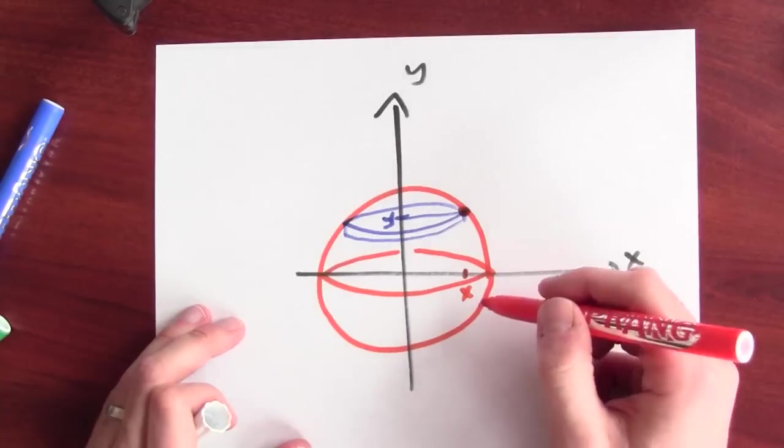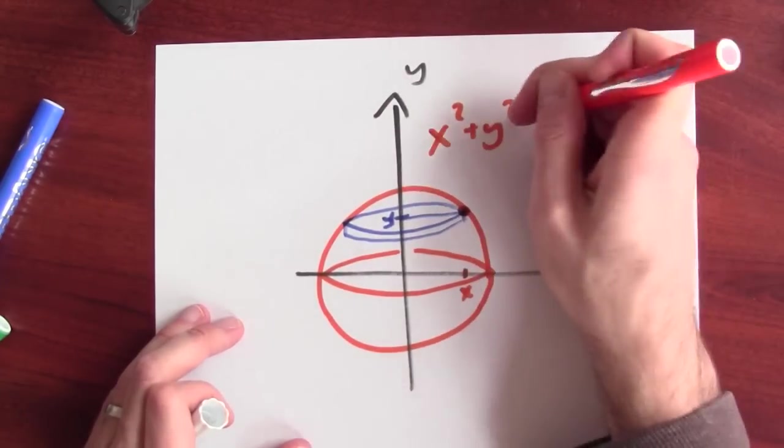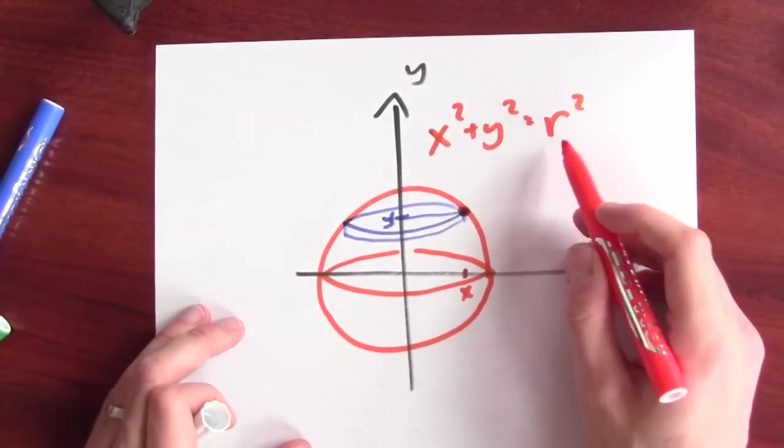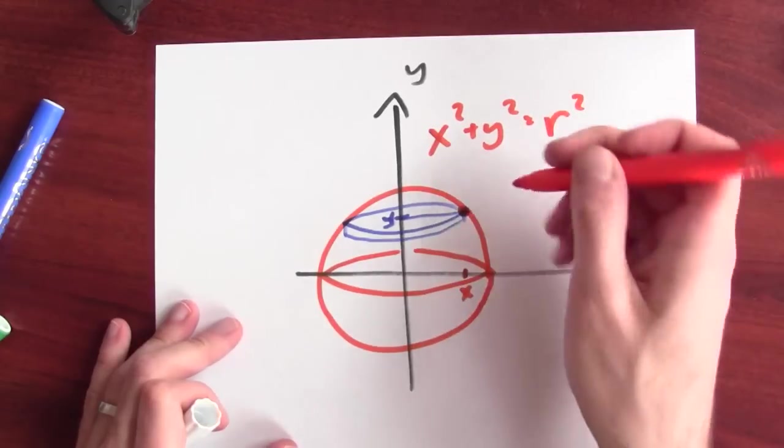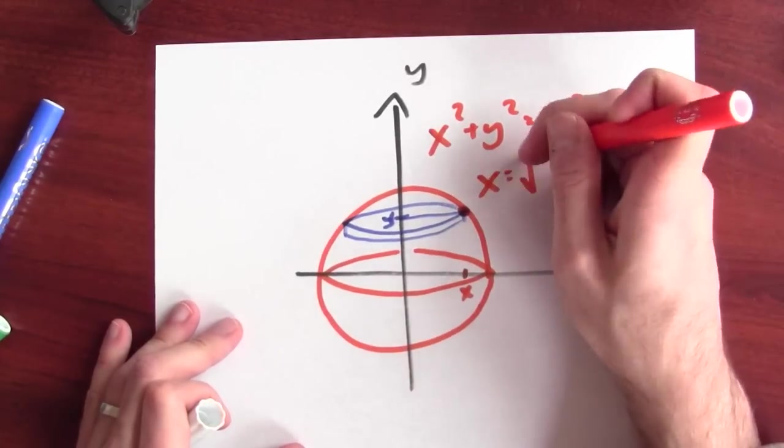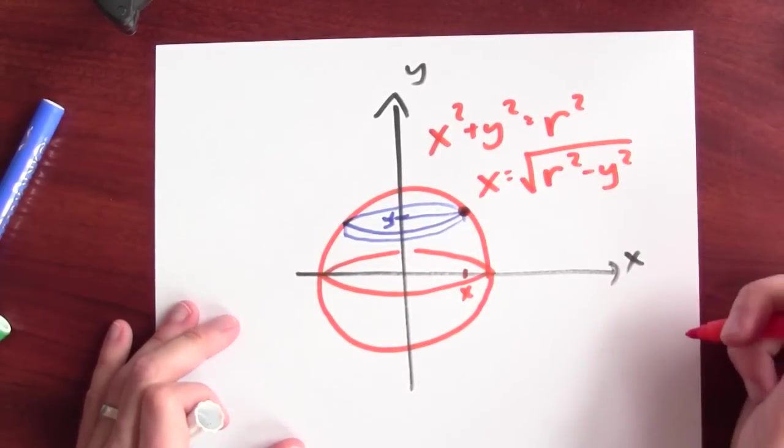I know the equation for the circle in the xy plane. That's x squared plus y squared equals r squared. r is the radius of the sphere that I'm thinking about. And I can solve this for x. x equals the square root of r squared minus y squared.